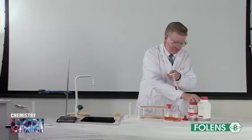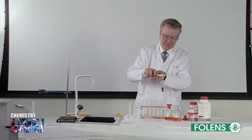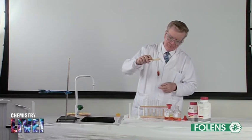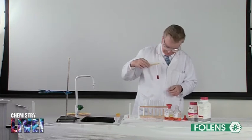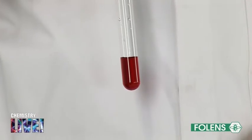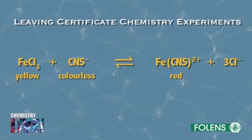Note that a red colour is observed. The red colour is caused by the formation of FeCNS2+ as shown on the screen. Since the red colour is observed, the equilibrium must lie on the right hand side of the equation shown on the screen.